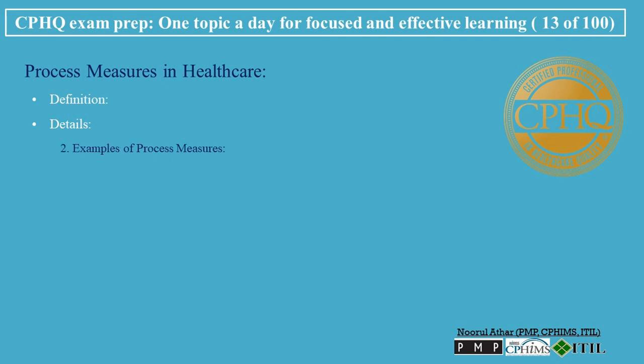Examples of process measures. Timely administration of medications: for instance, the percentage of heart attack patients who receive clot-busting medications within a specified time frame after arrival. Appropriate use of antibiotics: measuring whether surgical patients are given prophylactic antibiotics at the correct time to prevent infections.